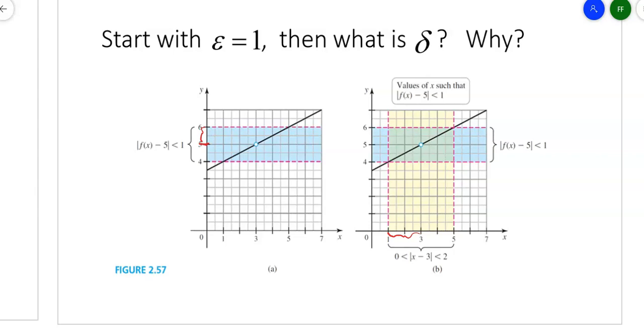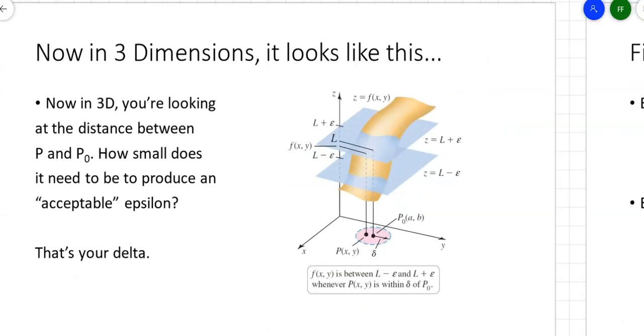Normally we don't use epsilon values of 1, we use much smaller values. But that's what it looks like in two dimensions. So what do you think it looks like in three dimensions?